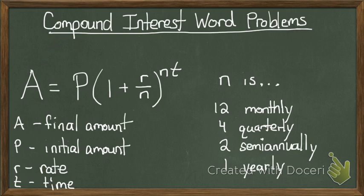N, which is in two places, represents how it's compounded. Monthly is 12, quarterly is 4, semi-annually is 2, yearly is 1.